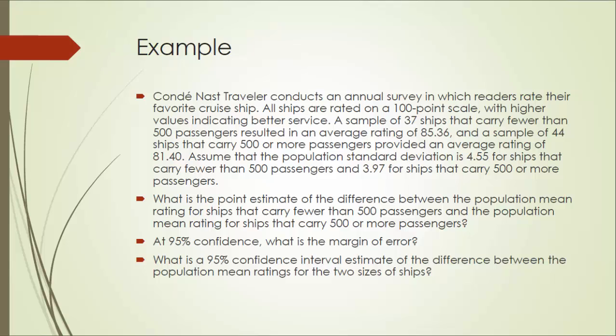A traveler magazine conducts an annual survey in which readers rate their favorite cruise ship. All ships are rated on a 100-point scale with higher values indicating better service. A sample of 37 ships that carry fewer than 500 passengers resulted in an average rating of 85.36. And a sample of 44 ships that carry 500 or more passengers provided an average rating of 81.4. Assume that the population standard deviation is 4.55 for ships that carry fewer than 500 passengers and 3.97 for ships that carry 500 or more passengers.